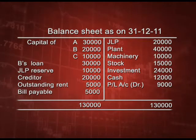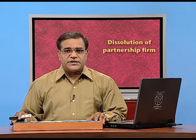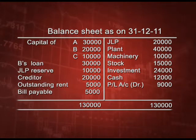Now let us start with one full question on dissolution to see all the journal entries and their effect on the capital account, and how the cash account tallies in the end. In this balance sheet, capital accounts are given, B loan is there, joint life policy reserve is there, creditors, outstanding rent, and bill payable are on the liability side, and on the asset side JLP is there. If JLP and JLP reserve are both given, both will be transferred to realization account. All assets — plant, machinery, stock — will also be transferred to realization account, whereas cash will be in the cash account and profit and loss debit balance will be transferred to partners' capital account.